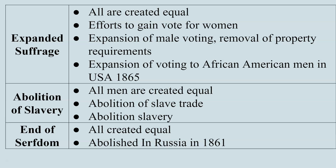Other outcomes from this period and the Enlightenment include the expansion of suffrage — voting rights. All of these ideas flow from the concept of natural rights, that all human beings are created equal. Women's efforts to gain the vote in the United States, Britain, and France culminated by the early 1920s. Male voting was also expanded through the removal of property requirements — in 1789 you had to own 50 acres of land to vote, meaning you had to be wealthy. Those requirements were gradually removed, and after the Civil War, voting rights were extended to African-American men.